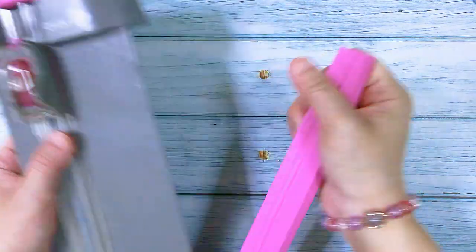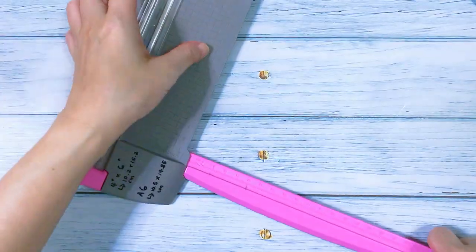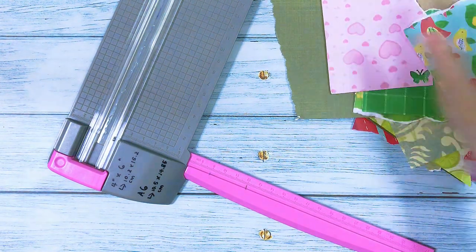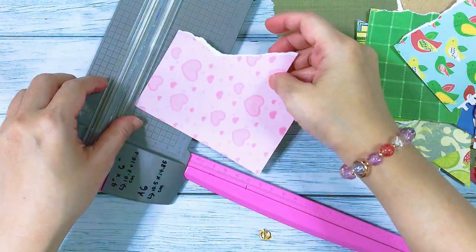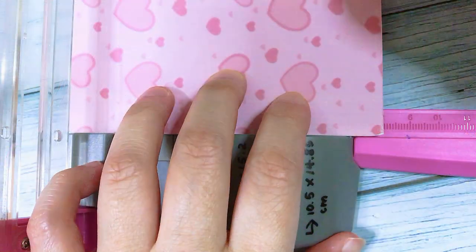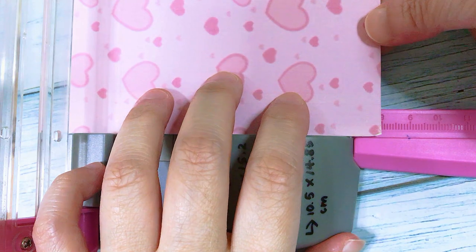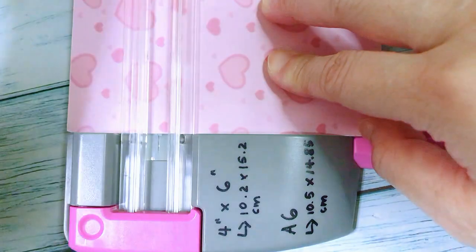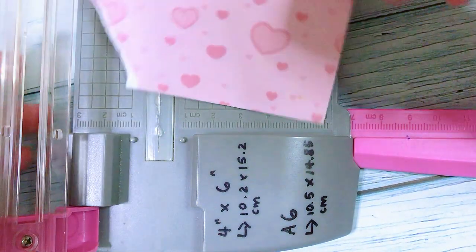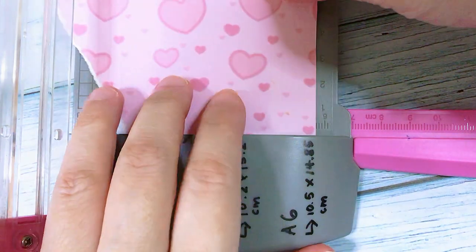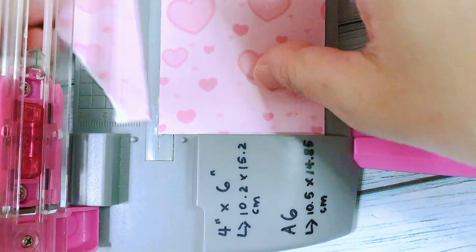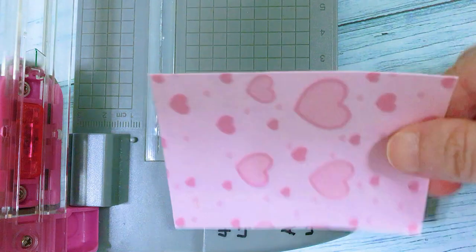Setting up my paper trimmer. I'll just start off with this pink paper. Put it at the eight centimeter mark. Now the width at the six centimeter mark. So that's one sheet done.